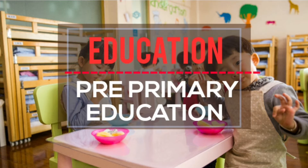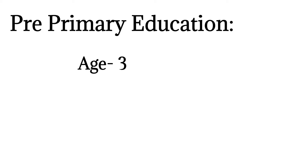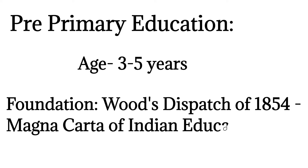What is pre-primary education? It is the education which is imparted to children before admitting them to the first standard of primary school. Pre-primary education consists of children of age 3 to 5. At this stage, the children are prepared for primary education. Students are given knowledge about school life and are taught to read and write some basic words.